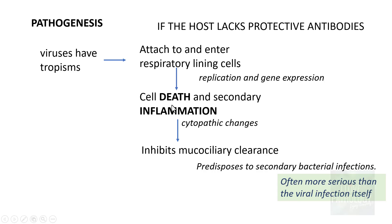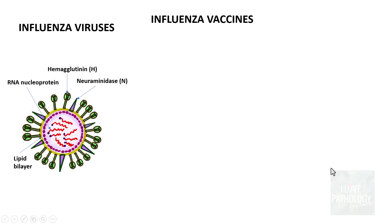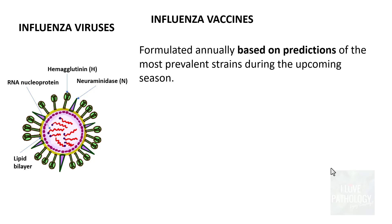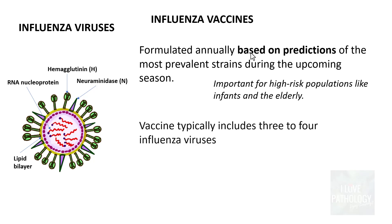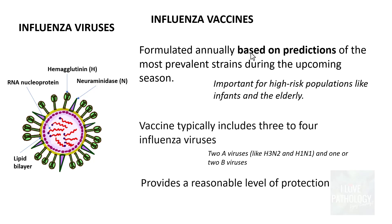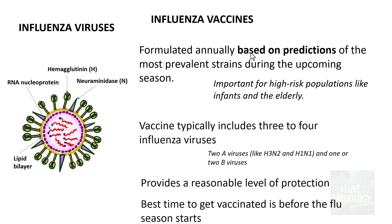The morphology and clinical features of influenza are the same as general viral infections. Influenza vaccines are formulated annually based on predictions of the most prevalent strains for the upcoming season. It is important to give vaccines to high-risk populations — infants and the elderly. The vaccine typically includes three or four influenza viruses — usually two type A and one or two type B — providing a reasonable level of protection. The best time to vaccinate is before flu season, as it takes at least two weeks to develop antibodies.